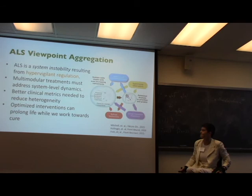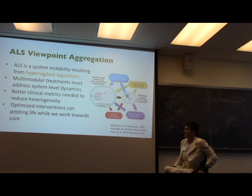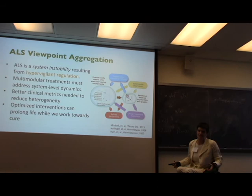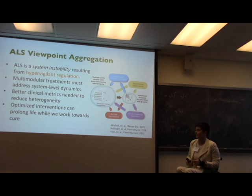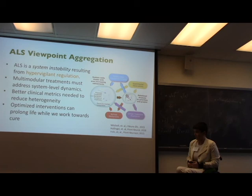Summing it up — ALS viewpoint aggregation. Overall, ALS is a system instability that results from hypervigilant regulation; the gains are just too high. Treatments are very sensitive to dynamics and it matters when you give them — there's not one treatment you can give the whole time. We need better clinical metrics to reduce heterogeneity, and we need more research on optimized interventions to prolong life while we're waiting. Remember the quilt — we're trying to stitch together all these patterns.